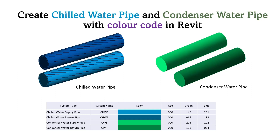Hello everyone. Today I would like to show you how to create chilled water pipe and condenser water pipe with color code in Revit. In the picture, chilled water pipe with insulation is on the left and condenser water pipe on the right side. I will use the RGB color code in the table below and create the material for the pipe system.